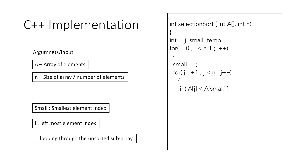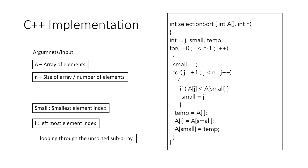At every step we compare the value at j and the value at small, and if the value at j is less than the value at small, we store index j in small. At the end of this loop we have the index of the smallest element in small. We then perform the swap using a temporary variable: store the value at index i in temp, store the value at small into index i, and finally store the value of temp at small. We repeat this process for every element from 0 to n-2.